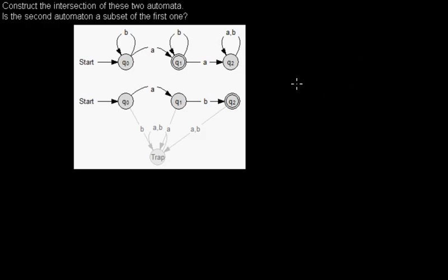Hello! Now that you know how to create the intersection of two deterministic automata, then you can easily check if an automaton generates a subset language of the language of the first automaton.